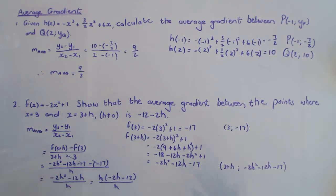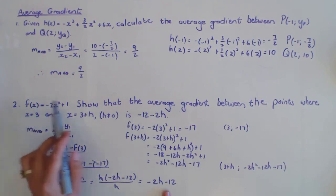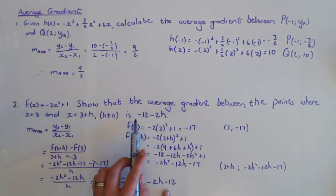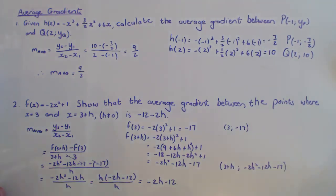If I take out the -2, you can do that, but then I have to multiply it in again at the end, so I'm not going to take it out. And they wanted me to show that the average gradient is -12 - 2h, which indeed it is.